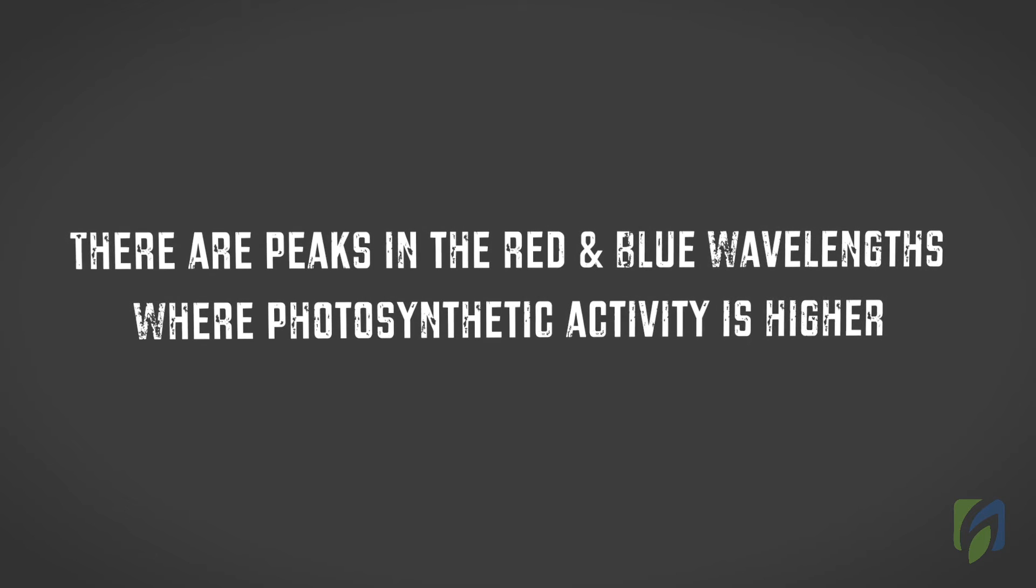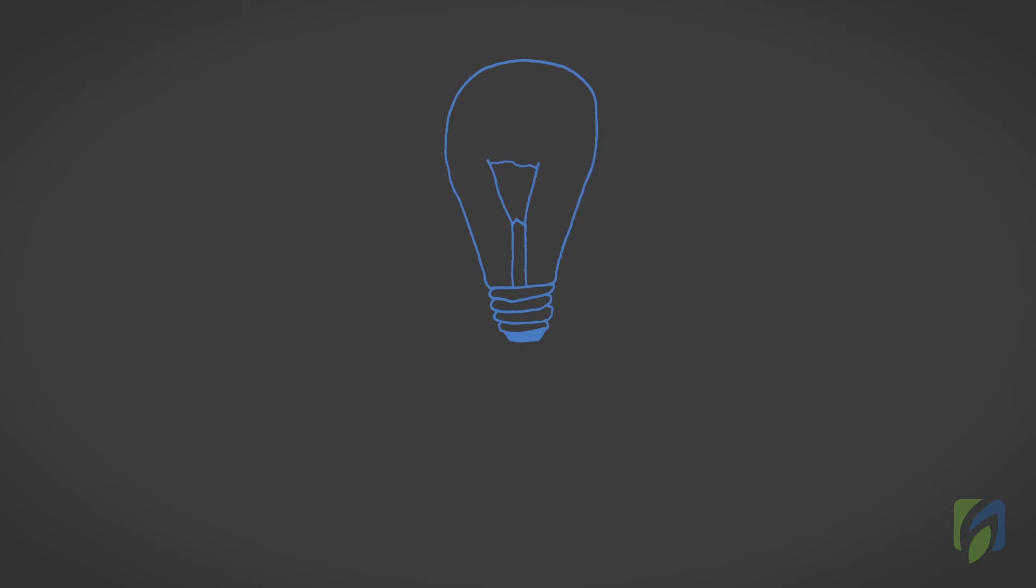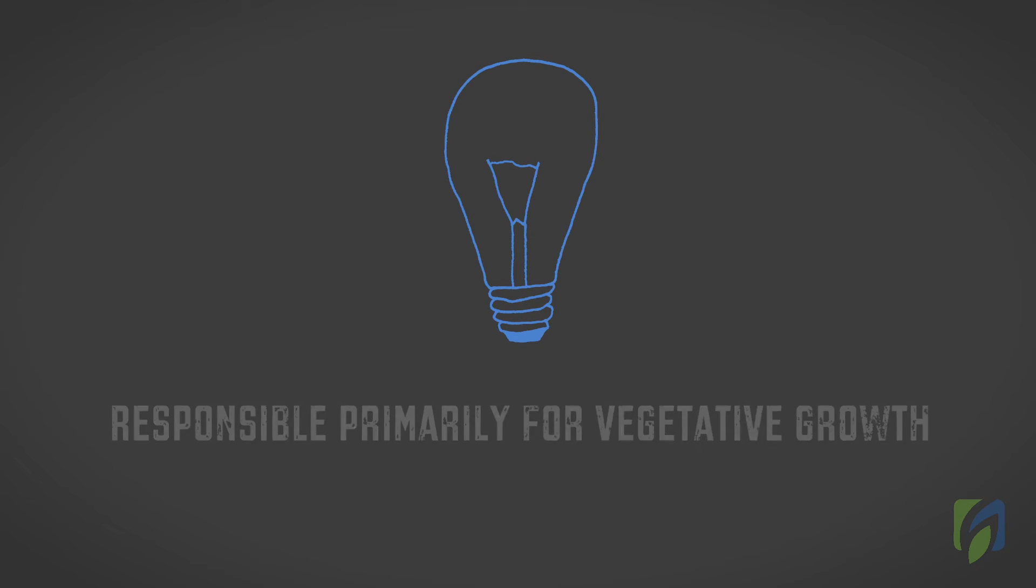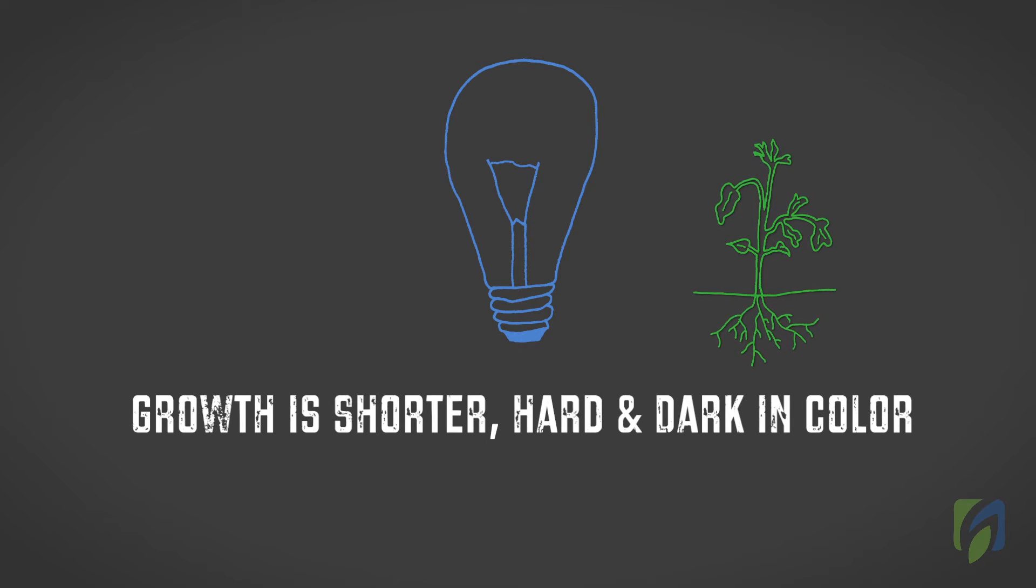There are peaks in the red and blue wavelengths where photosynthetic activity is higher. Blue light is responsible primarily for vegetative growth. When blue light alone is supplied to plants, growth is shorter, harder, and dark in color.